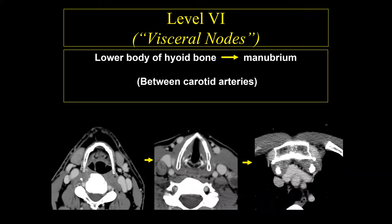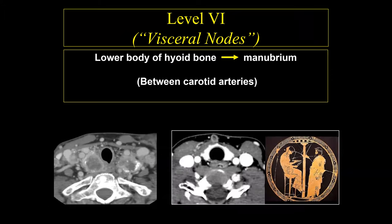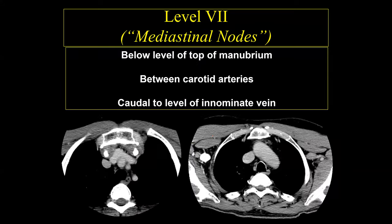Level 6 lymph nodes are located from the hyoid bone down to the manubrium, but specifically between the carotid arteries. Lymph nodes lateral to the carotids are level 3, but a lymph node between the carotid arteries is level 6. Bilateral metastatic level 6 lymph nodes with calcifications are indicative of papillary thyroid carcinoma. The pretracheal or pre-laryngeal lymph node is called the Delphian lymph node, named after the Oracle of Delphi, who could determine survival by palpating the anterior neck.